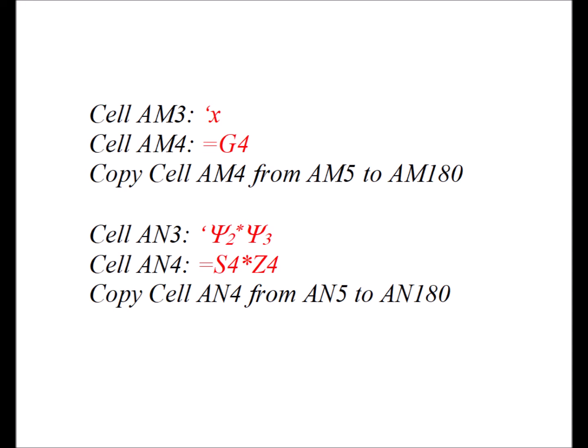For the fourth example, we have the label psi2 star psi3 — the orthogonality of the n equals 2 and n equals 3 eigenfunctions. The formula in the corresponding cell is equals S4 times Z4, and then we copy that cell from row 5 to row 180.